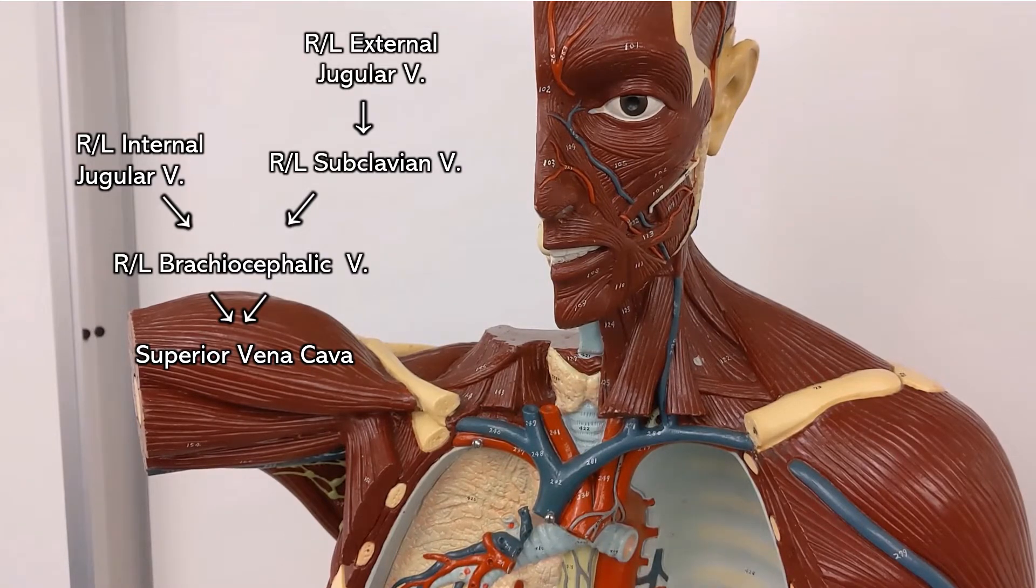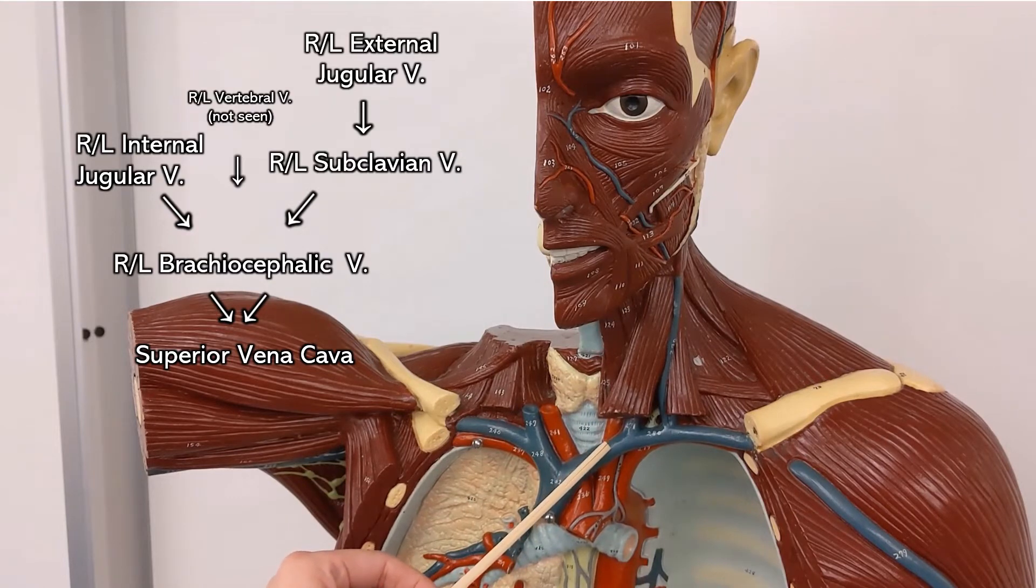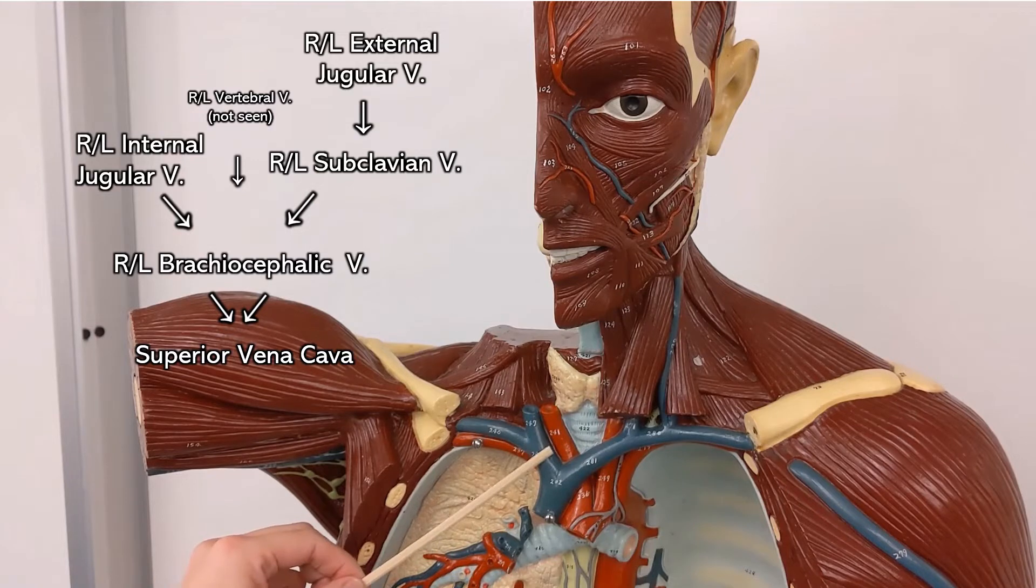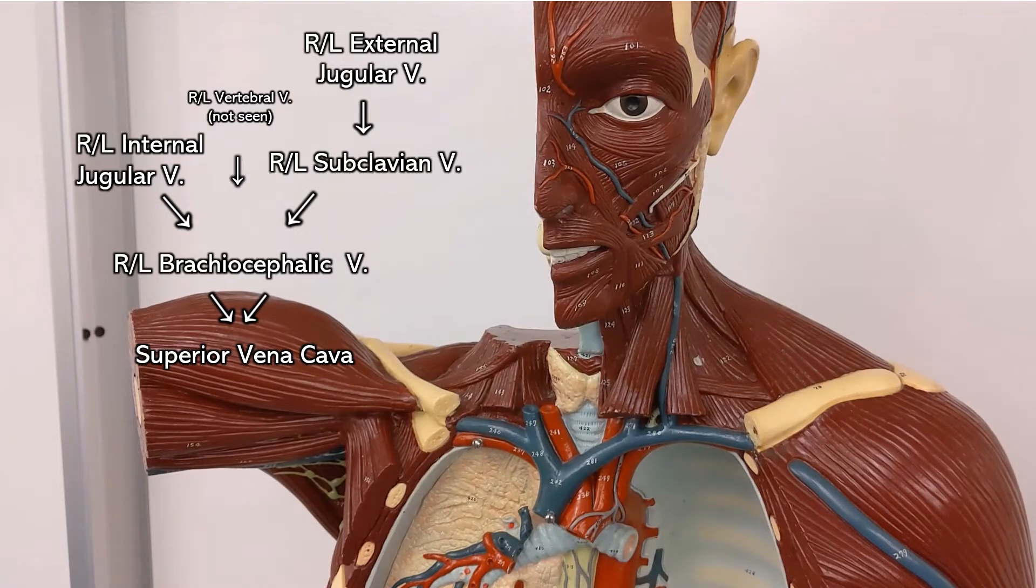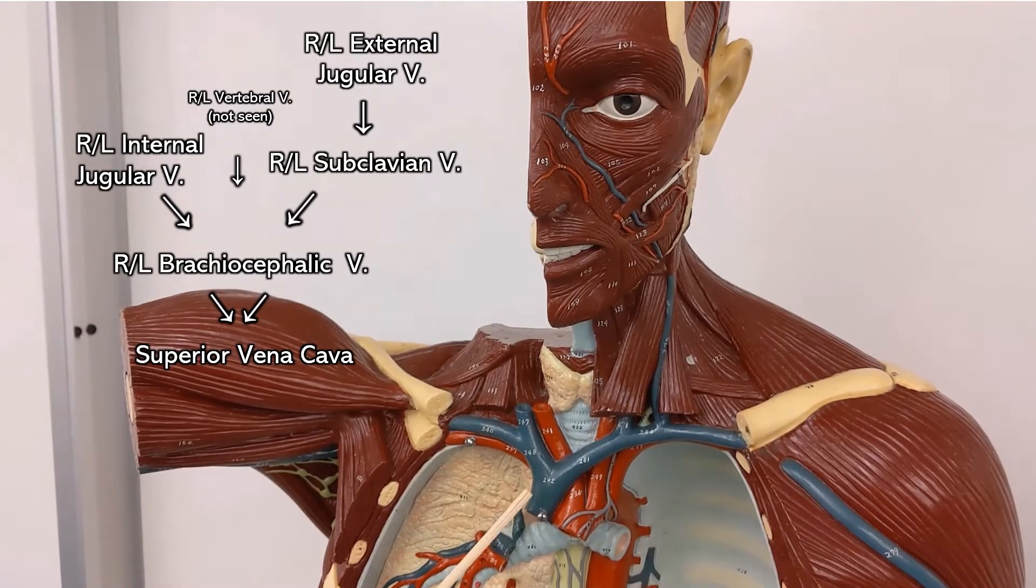Now we can't see it on this model but the vertebral veins are kind of sneaking down behind and they also join the brachiocephalic veins. Now remember I'm not saying left and right all the time but everything will have a left and right except for obviously the superior vena cava.